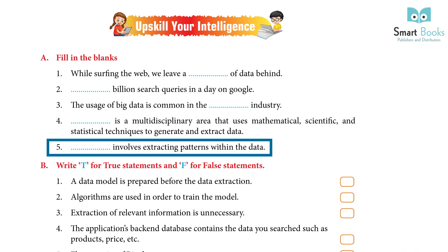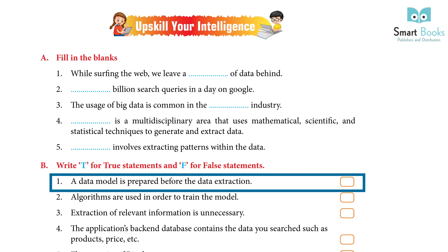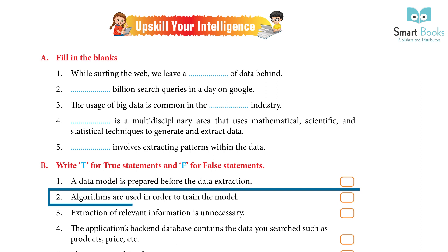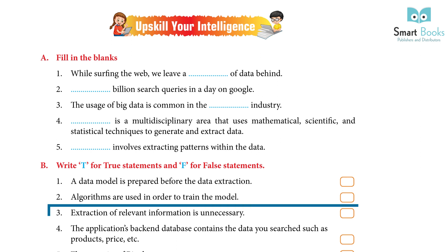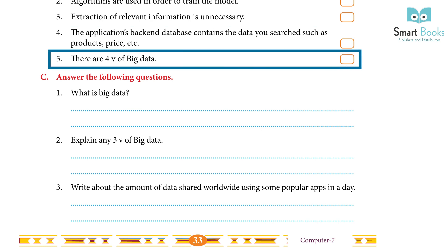Write T for true statements and F for false: 1. A data model is prepared before the data extraction — False. 2. Algorithms are used in order to train the model — True. 3. Extraction of relevant information is unnecessary — False. 4. The application's back-end database contains the data you search, such as products, price, etc. — True. 5. There are four V's of big data — False.